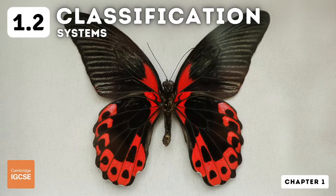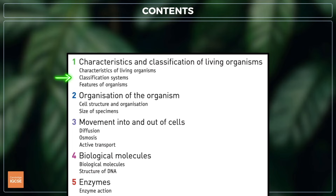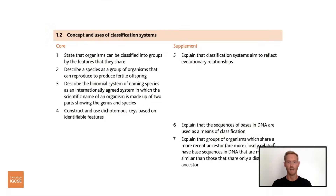Hello and welcome to another complete Cambridge IGCSE biology lesson, where you'll learn absolutely everything you need to know on topic 1.2, concept and uses of classification systems. As always, we'll be following the Cambridge syllabus exactly, and we'll cover absolutely everything you need to know for your final exam.